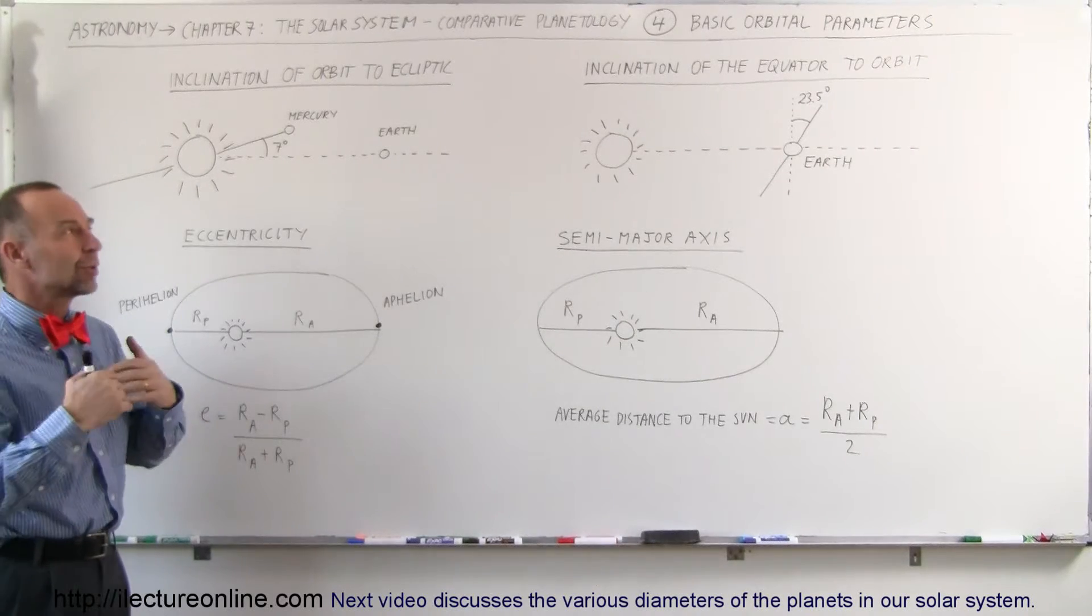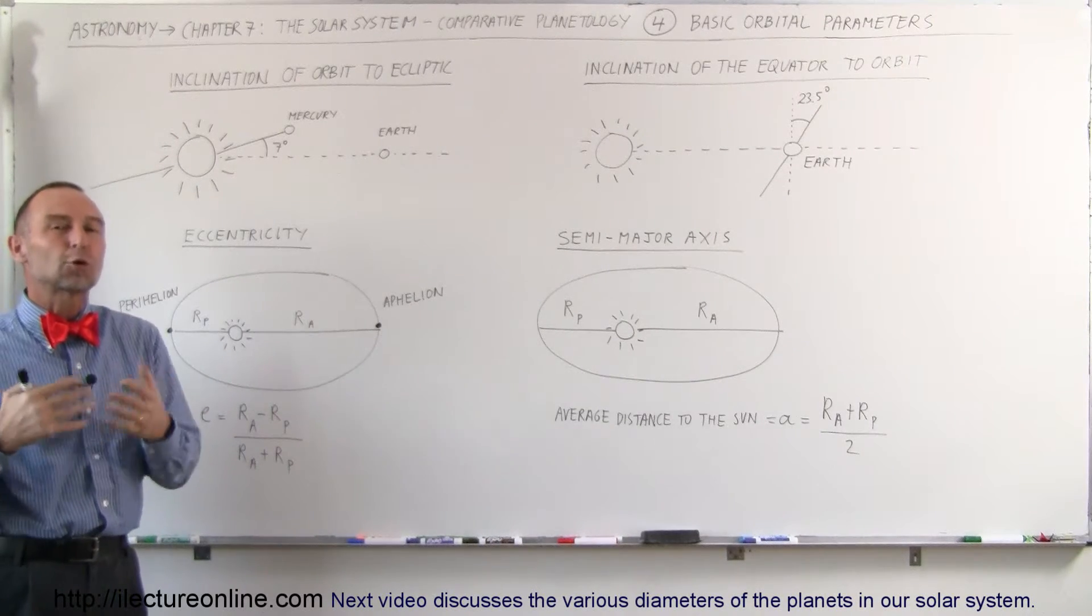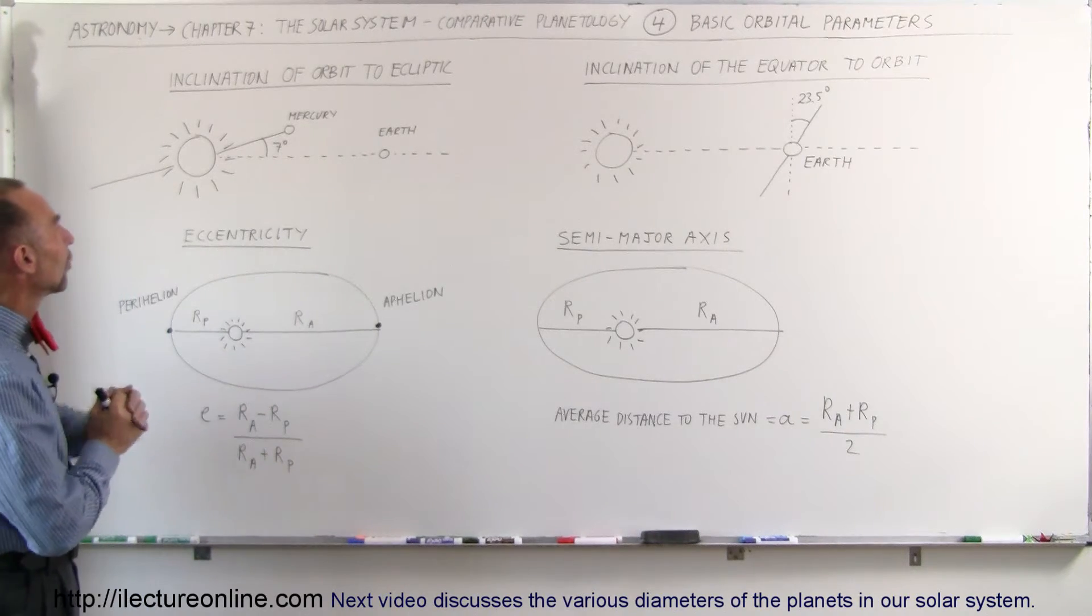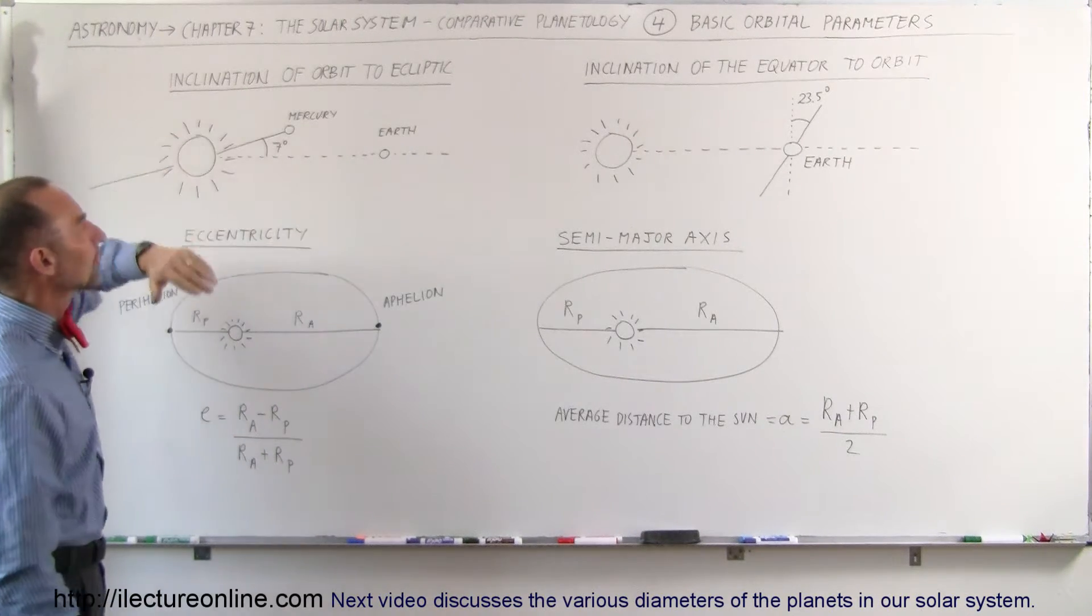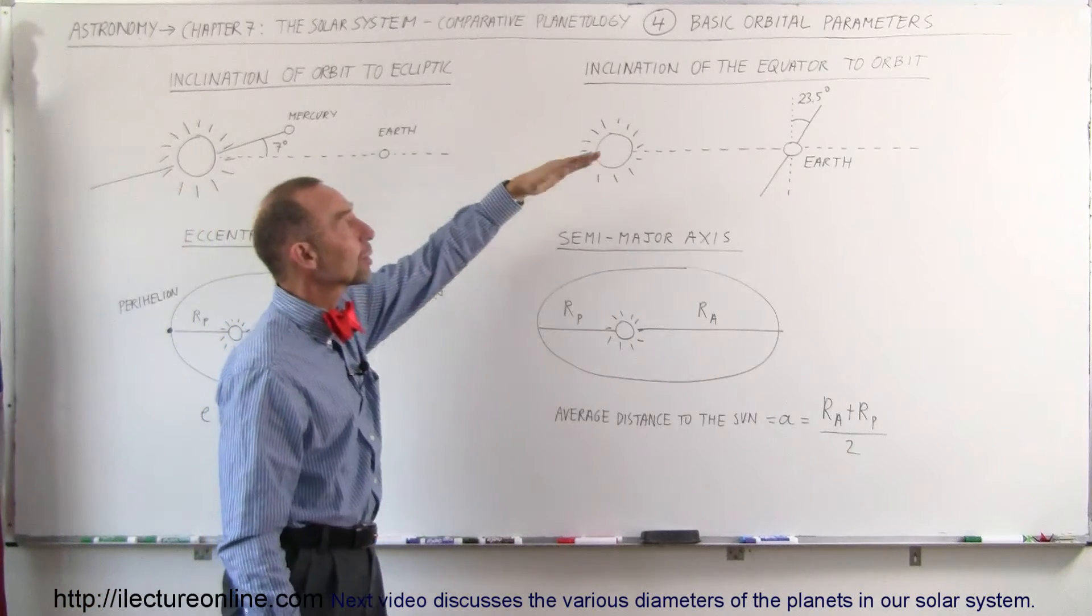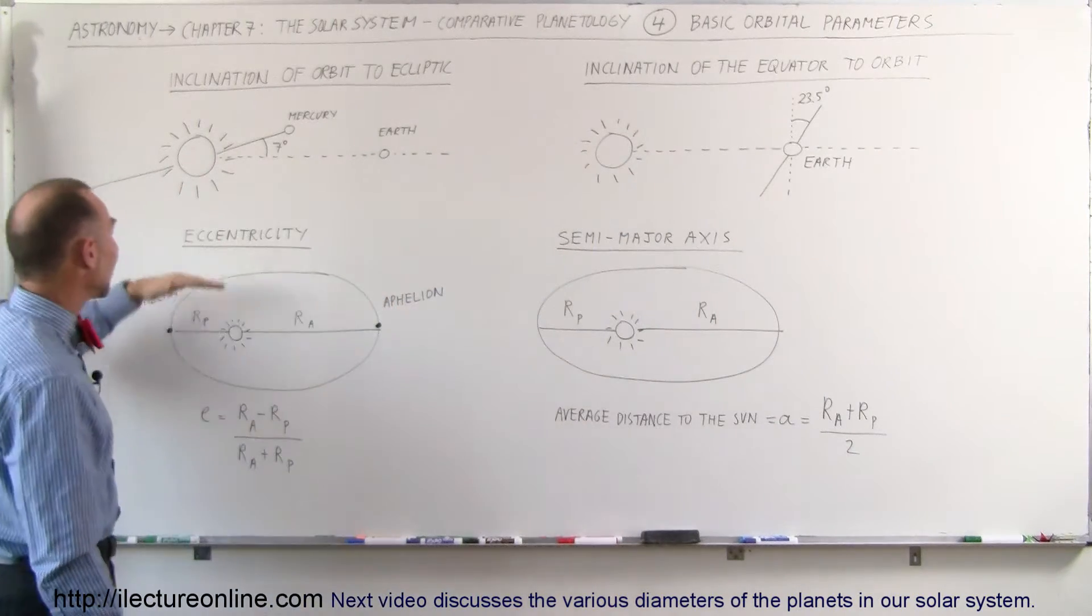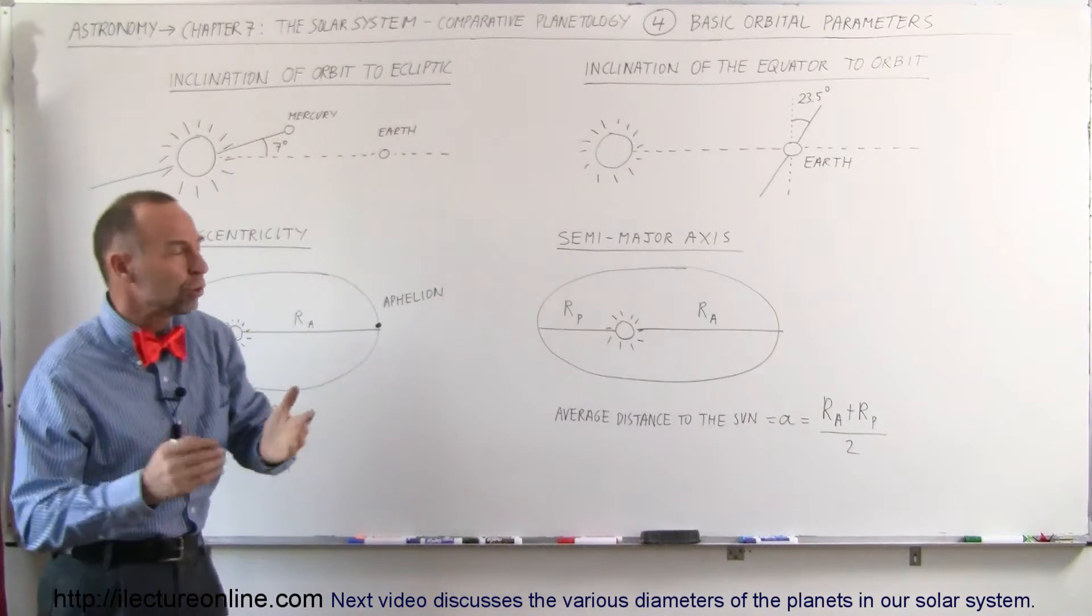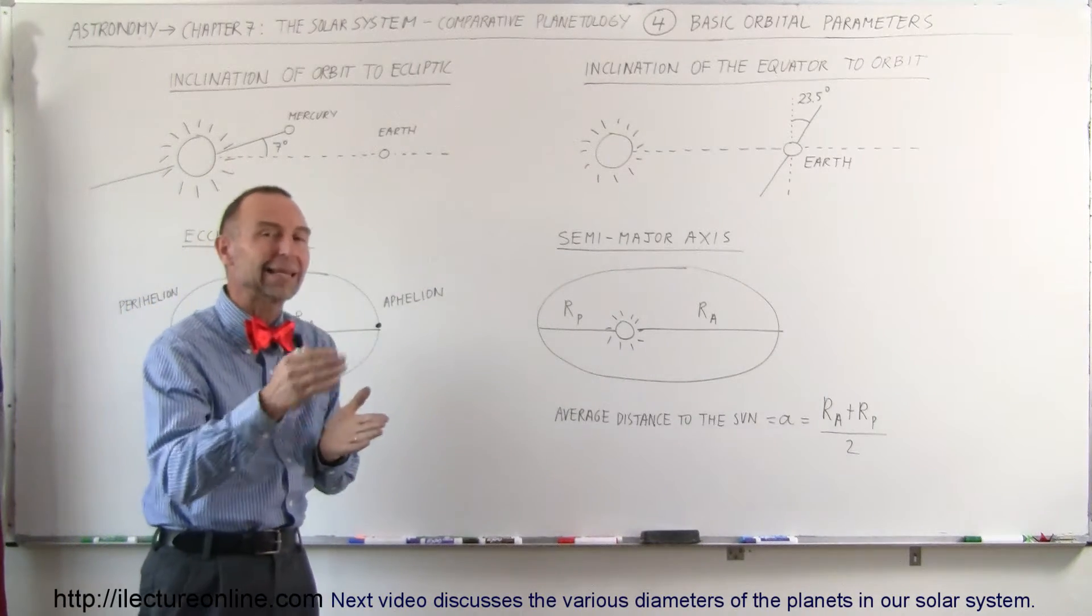Welcome to Electronline, and here to get a better understanding of some of the basic orbital parameters, we're going to talk about four of the major ones. We have the inclination of the orbit to the ecliptic, we have the inclination of the equator to the orbit, we have eccentricity, and we have semi-major axis, which is also known as the average distance between the planet and the Sun.